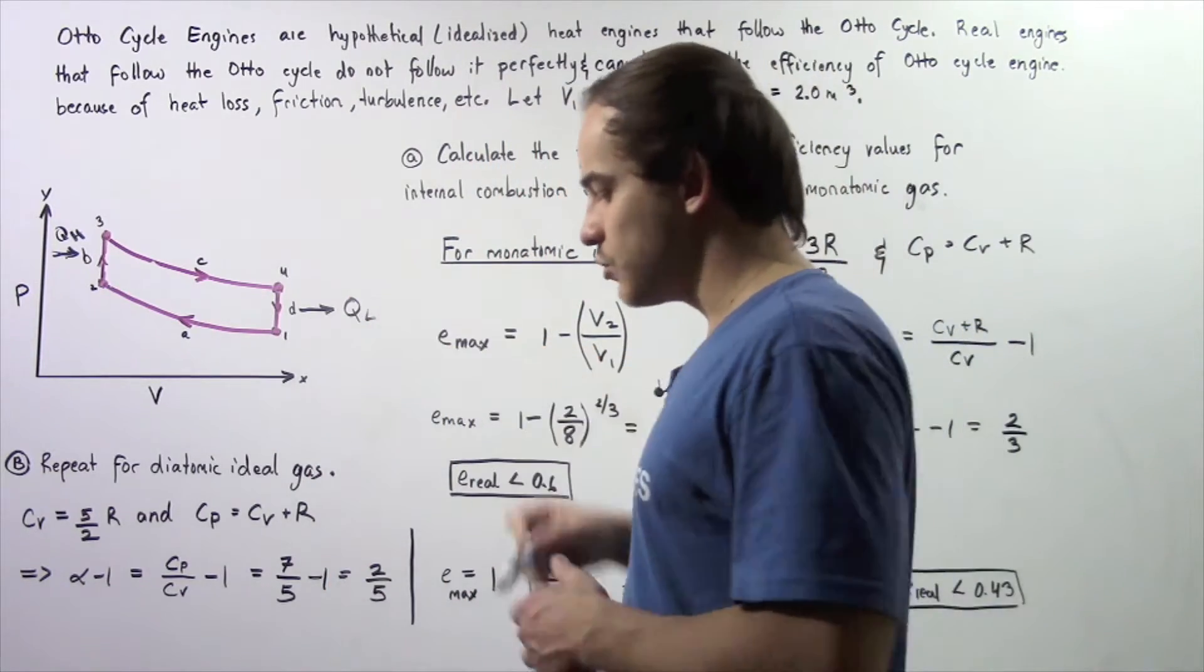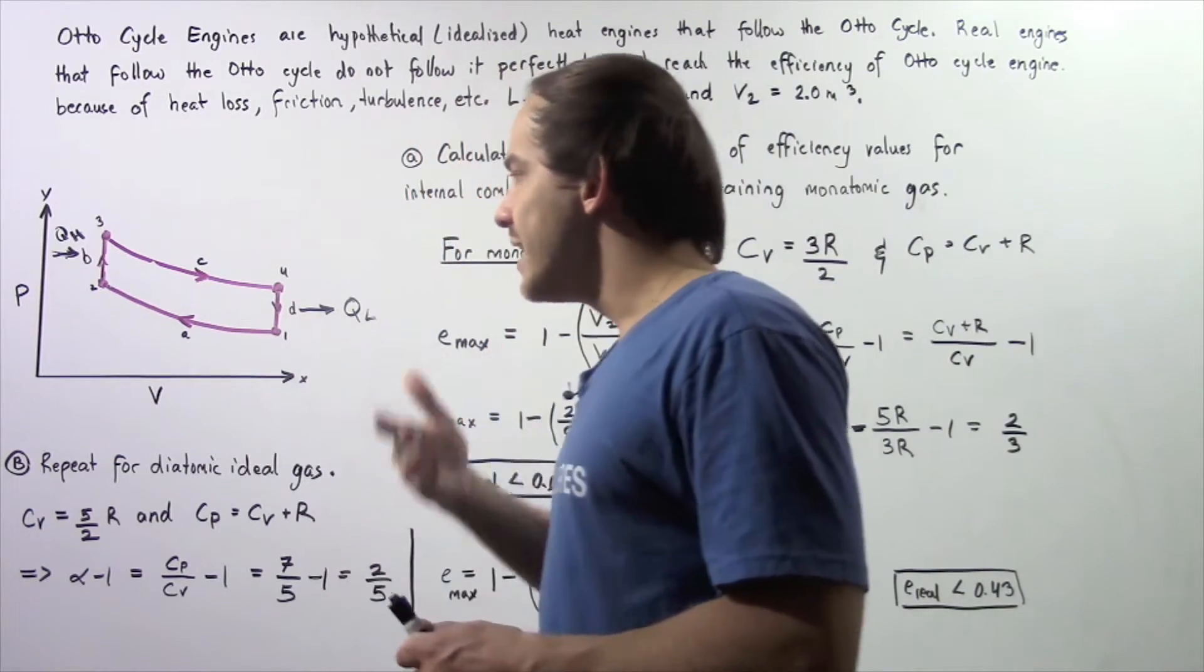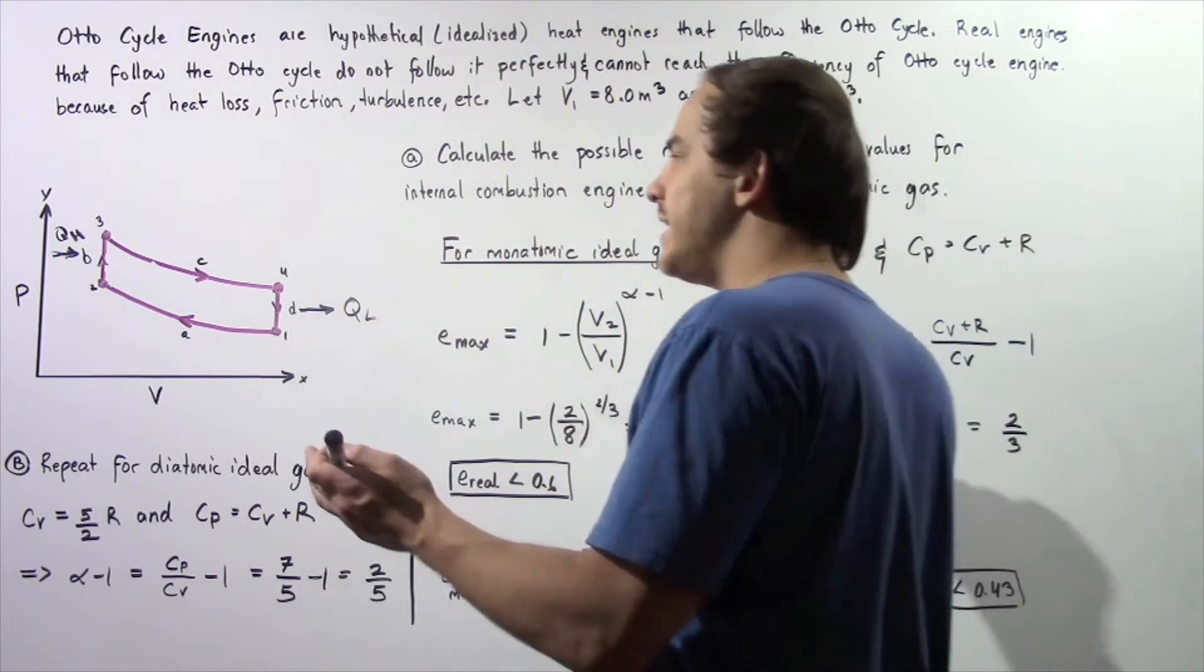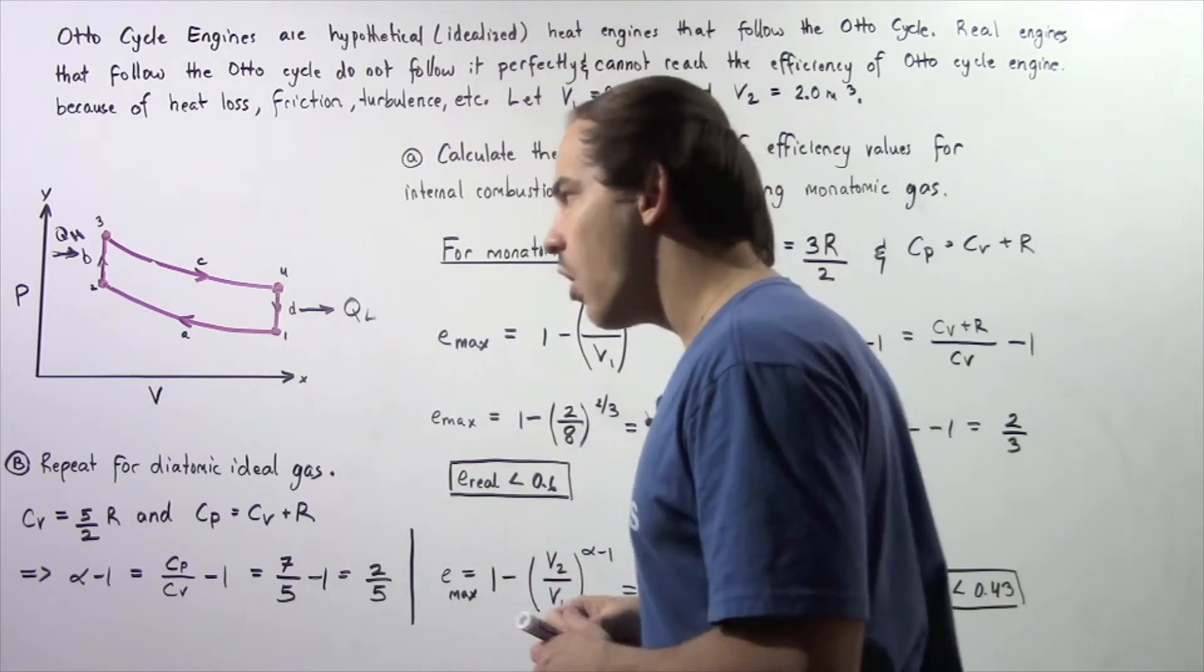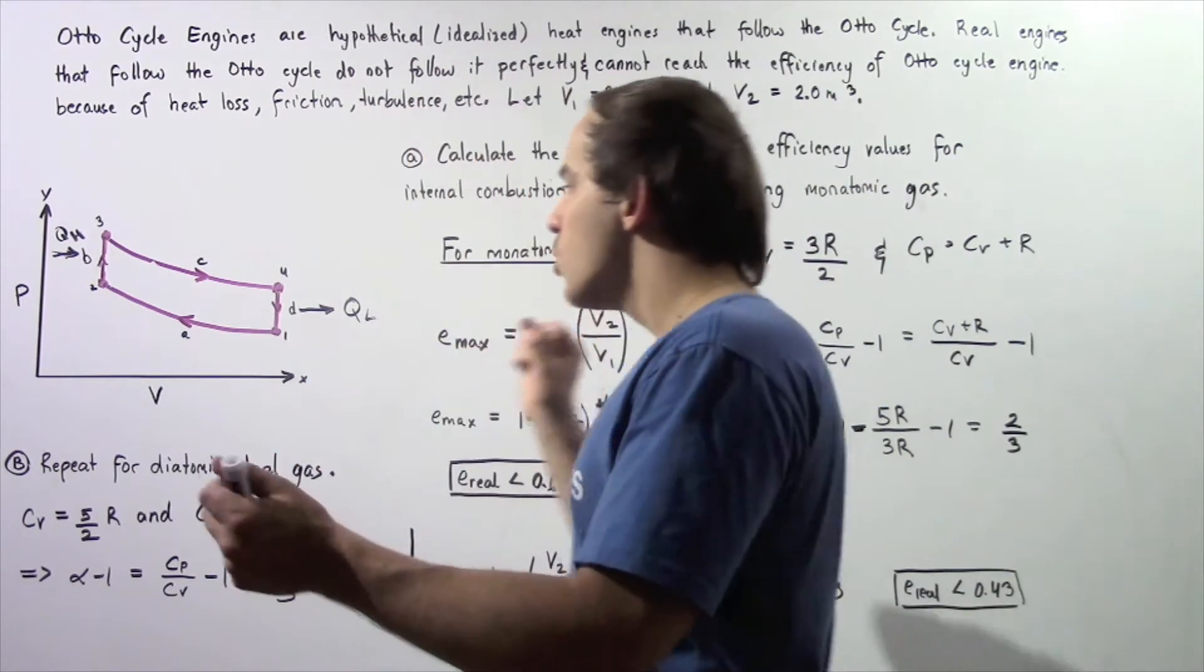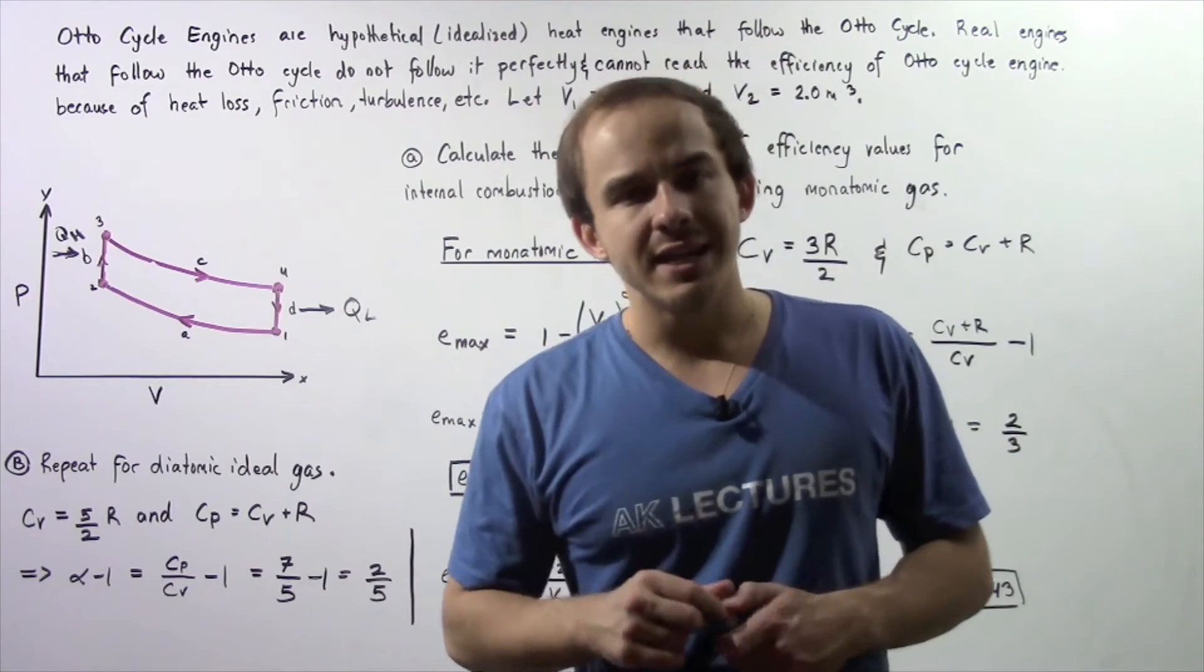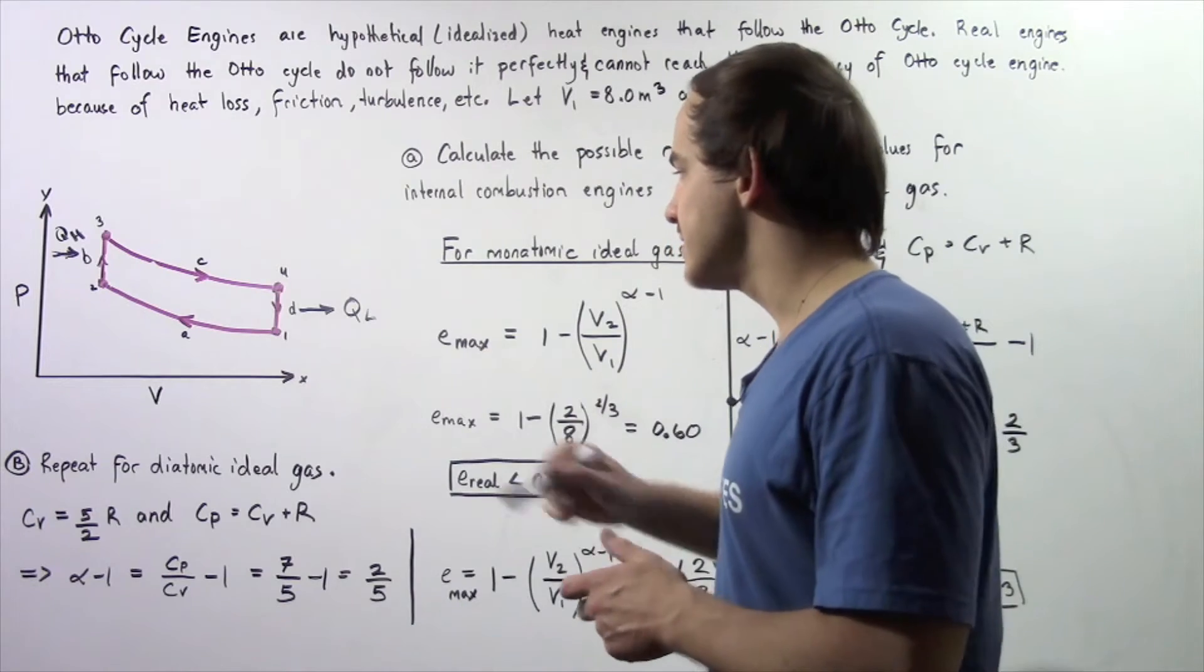So we begin at position 1 and our gas is compressed adiabatically to position 2. When we go from position 2 to position 3 that process is an isovolumetric process and heat flows into our system. When we move from position 3 to position 4 that process is once again an adiabatic process but now we're expanding our volume. And finally when we go from position 4 back to position 1 that is an isovolumetric process in which heat flows out of our system.